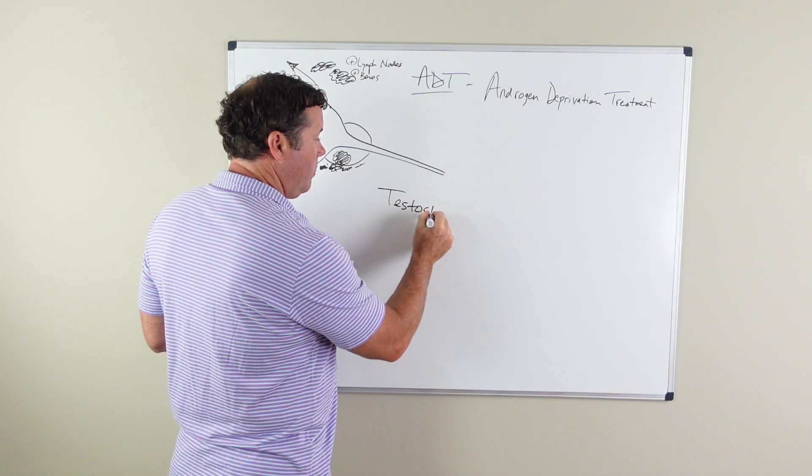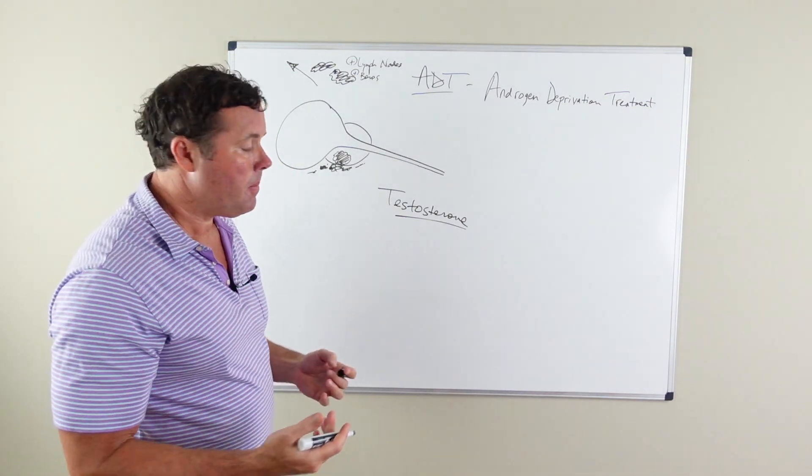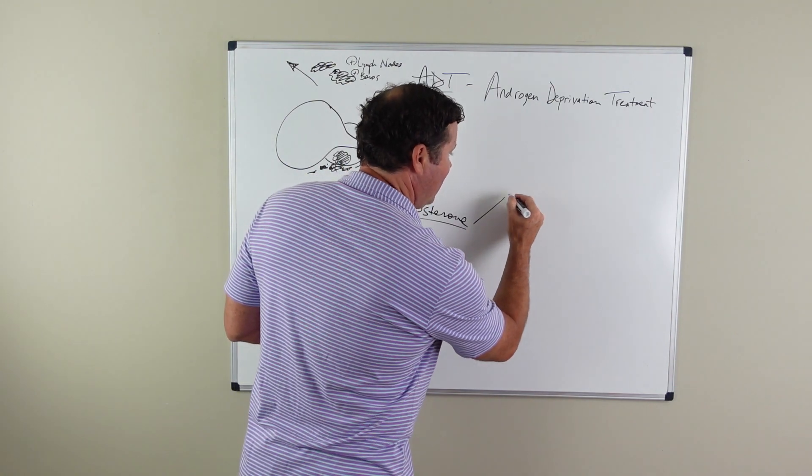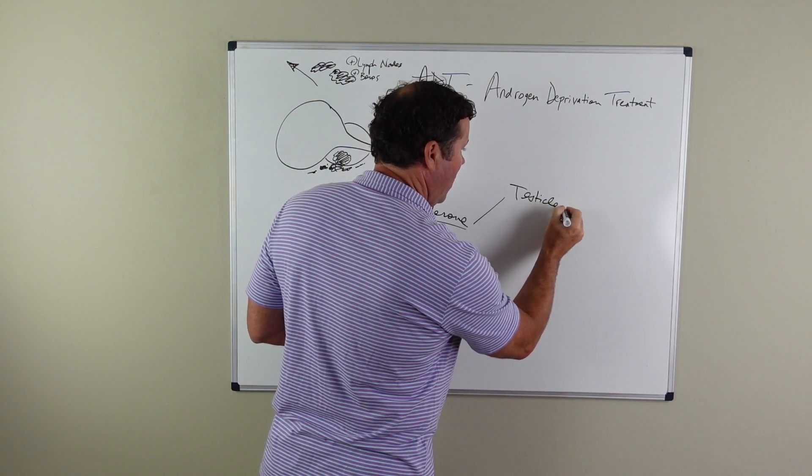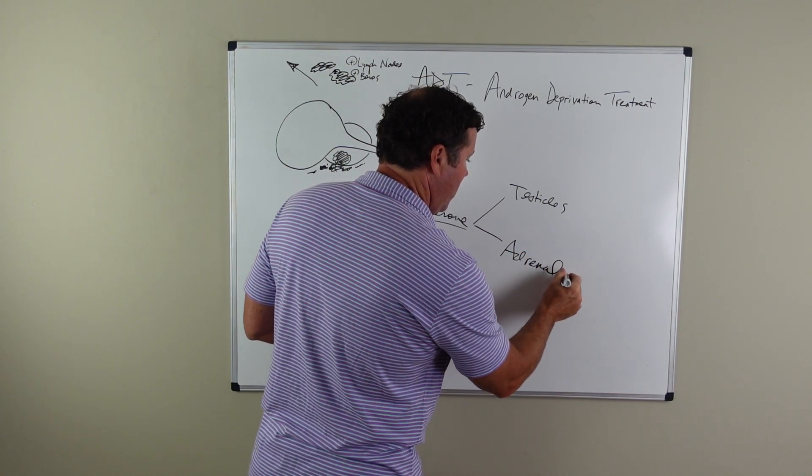Testosterone is the male hormone that is produced by two areas of the body. One, it's produced by the testicles, and it's also produced about 10 percent by the adrenal glands.